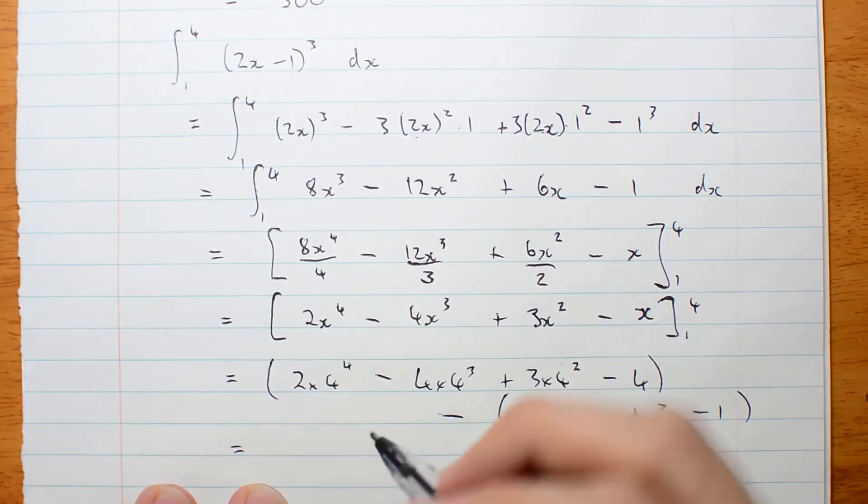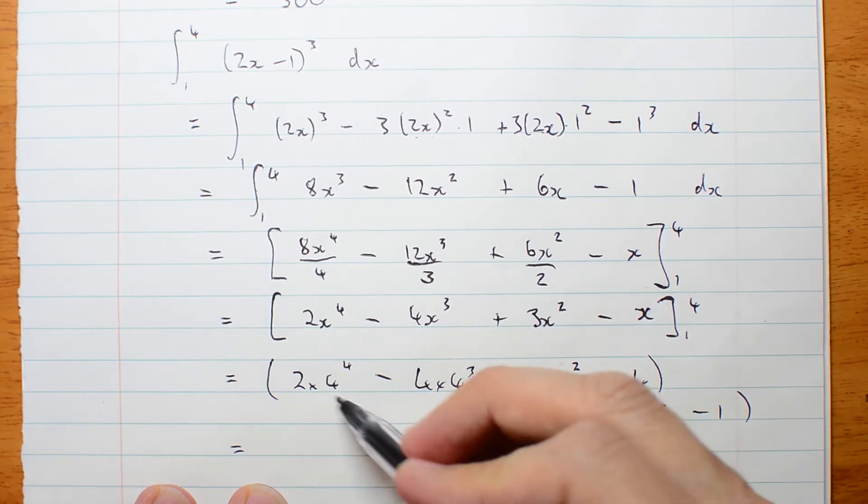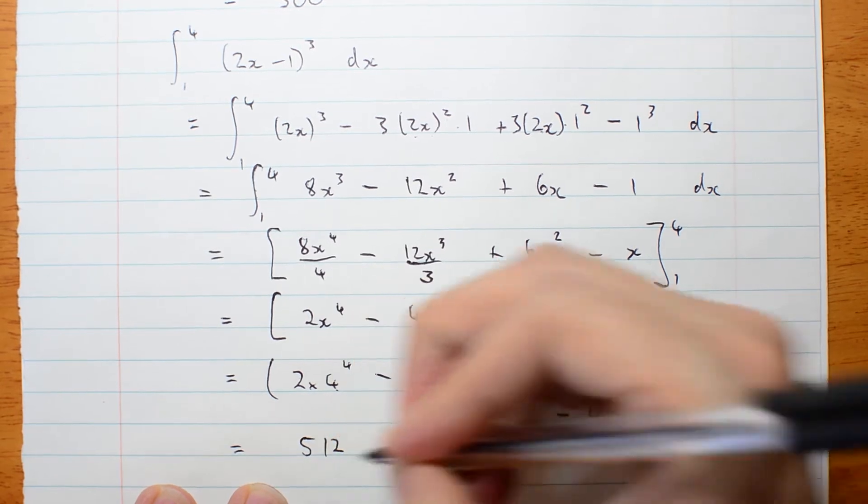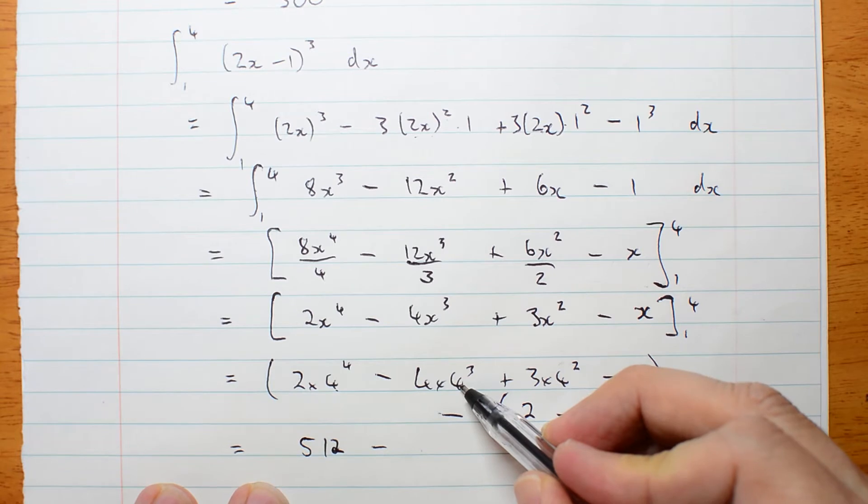So this is 4, sorry, 4 squared is 16. 16 squared is 256. That's 2 lots of that is 512.